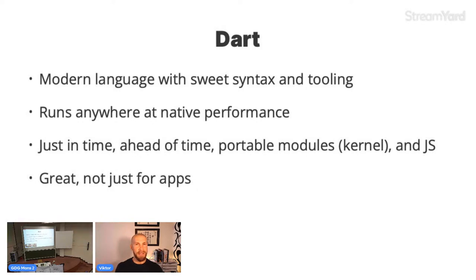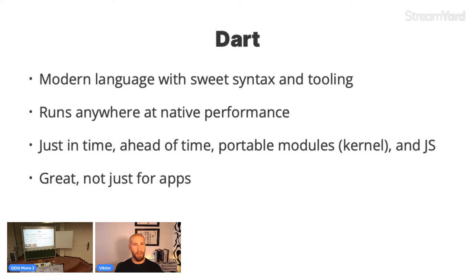Looking at Dart, it's a very modern language with really good tooling — a great analyzer, perfect autocomplete — and it runs anywhere at native performance. You can run Dart in many different modes: as a scripting language, compiled ahead-of-time to native code, compiled to a portable kernel module (similar to Java's bytecode) which starts very quickly and is cross-platform, or compiled to JavaScript — which is actually where Dart once started, as a way to replace JavaScript.